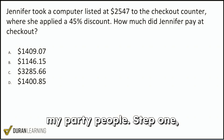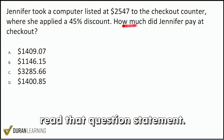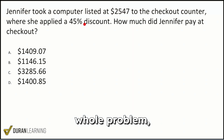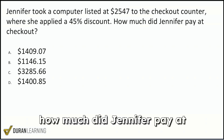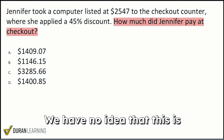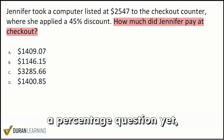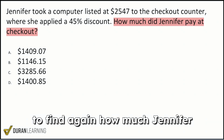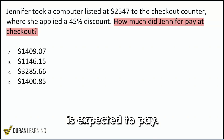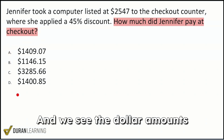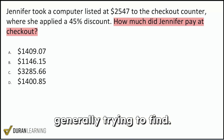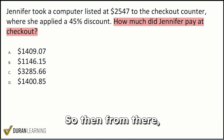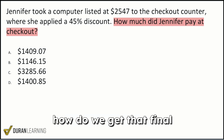So let's get it going. Step one: read the question statement. Don't go reading the whole problem, just read the question statement. It says: how much did Jennifer pay at checkout? We have no idea this is a percentage question yet, but we know we're trying to find how much Jennifer is expected to pay, and we see the dollar amounts in the answer choices. So we know what we're generally trying to find — how do we get that final payment?